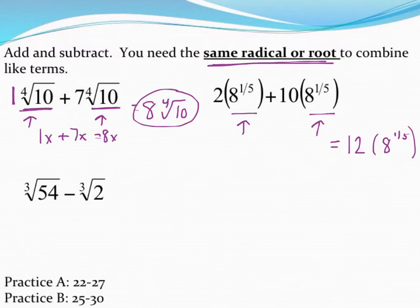For our last example on this screen, we come to one where we don't have the same number inside the radical. The big common mistake that lots of people want to make with this is they just want to say that's going to be the cube root of 54 minus 2 is 52. That's very wrong. Don't ever do that. You can't subtract two things if they do not have the same number inside the radical in this case.